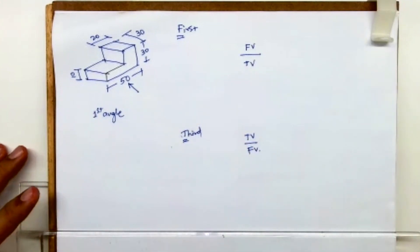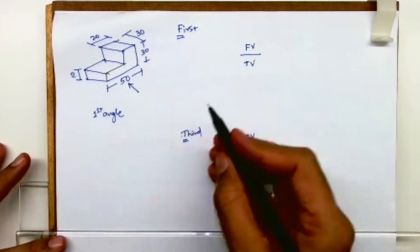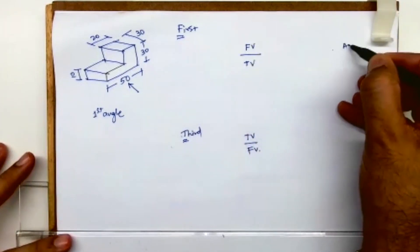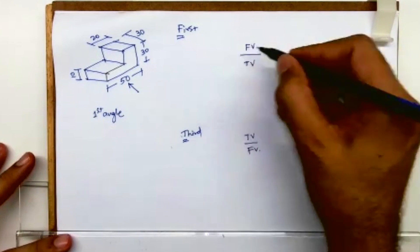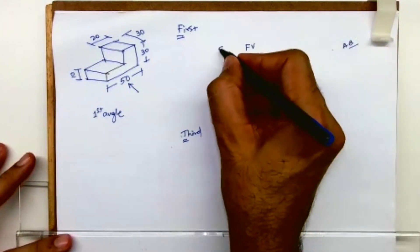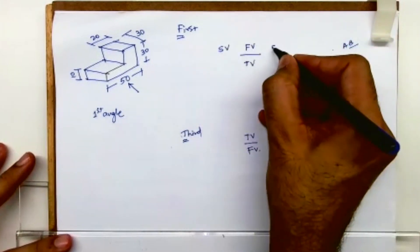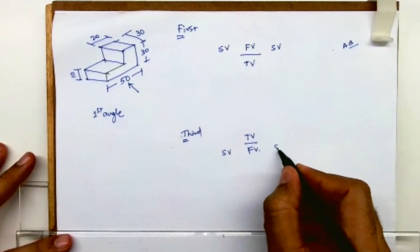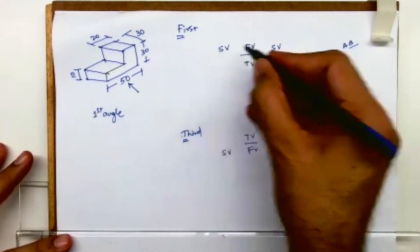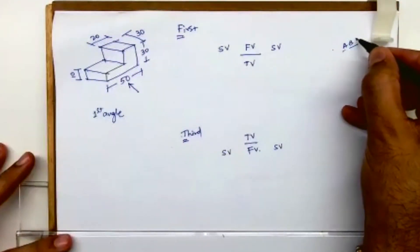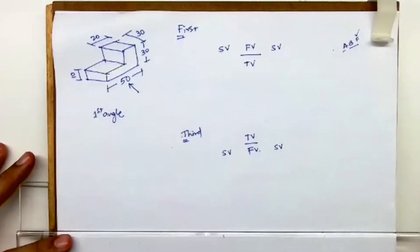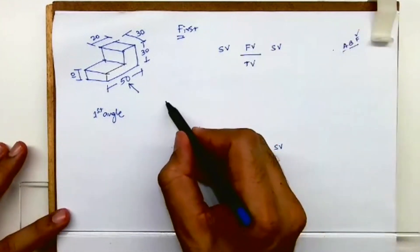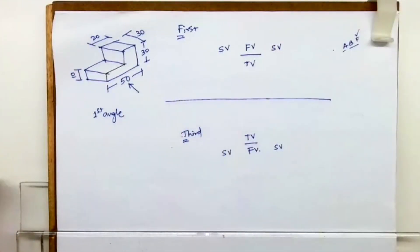Now for the side view — between F and T, if you write ABCD, F comes first. So I will draw the side view next to the front view. This will clear it out. The side view is always next to the front view because in alphabetical order F comes first. I know it's a very simple logic, but this is how you can remember it.